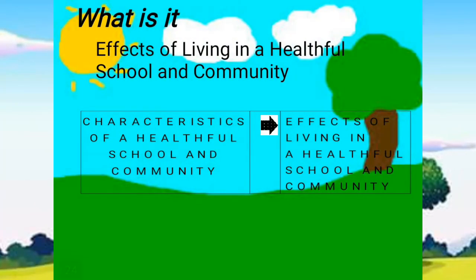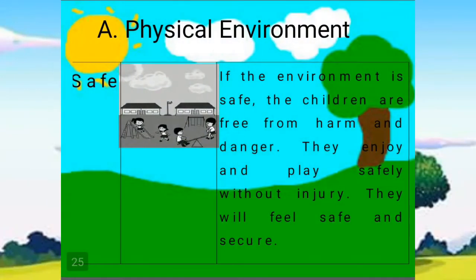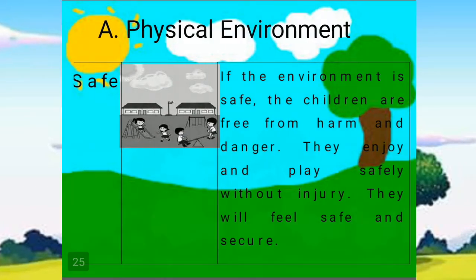Here are the effects of living in a healthful school and community. In Column A are the characteristics of a healthful school and community, and in Column B are the effects. Number 1: the characteristic under the physical environment is 'safe.' The effect is: if the environment is safe, the children are free from harm and danger. They enjoy and play safely without injury — they will feel safe and secure.